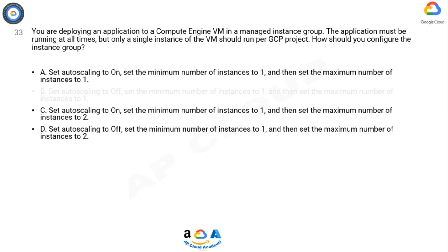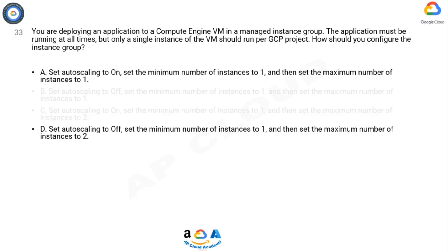Option C is incorrect — it creates another instance after deletion; however, two VMs could be created even if the target is exceeded. Option D is incorrect — it does not fit the requirement because after the deletion of the instance, no other instance was created.